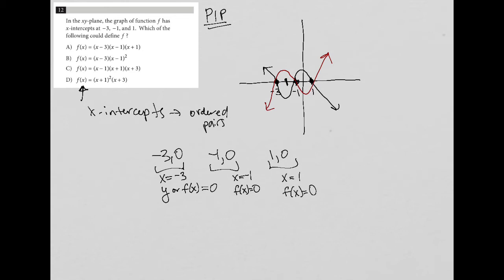So these points then become things that I can use to test my answer choices. So choice A, if I were to plug in negative 3, if I were to plug in X equals negative 3, here I'd get negative 6, here I'd get negative 4, and here I'd get negative 2. Negative 6 times negative 4 times negative 2 does not equal 0. Again, this tells me that when X is negative 3, F of X should be 0. So that means A is gone.